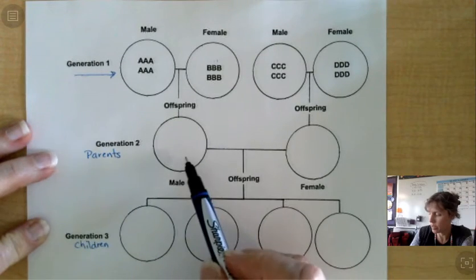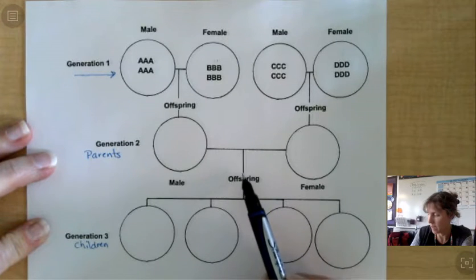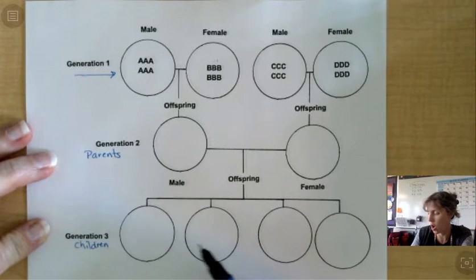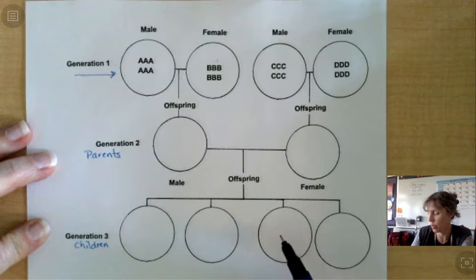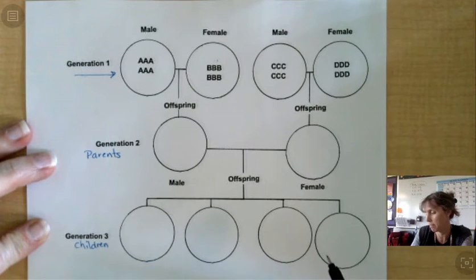So this Dad and this Mom got together. They had four offspring. One, two, three, four. They have four kids.